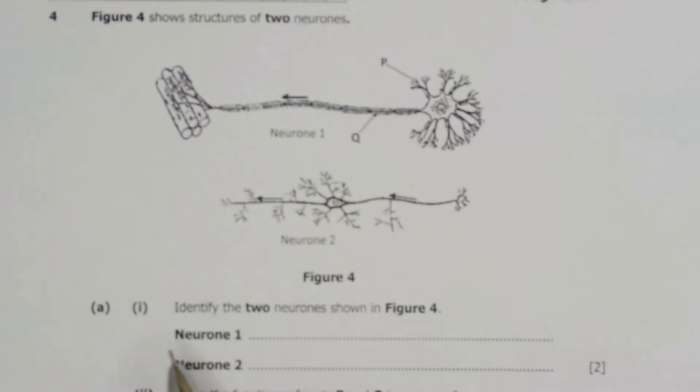We'll start with part A1. Identify the two types of neurons shown in figure four. So we have neuron one and neuron two.